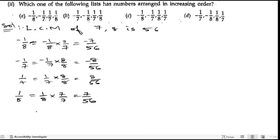So here as you can see, the lowest number will be the highest negative number, that is -8/56. So let us write down.